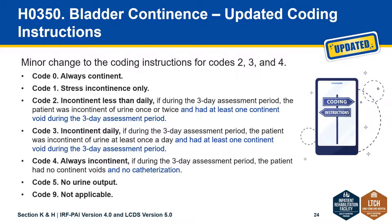The updated coding instructions include minor changes for coding numbers 2, 3, and 4, based on questions raised about exactly when to use these codes. For code 2, incontinent less than daily: if during the three-day assessment period the patient was incontinent of urine once or twice and had at least one continent void. For code 3, incontinent daily: if incontinent at least once a day and had at least one continent void. For code 4, incontinent: if the patient had no continent voids and no catheterization during the three-day assessment period.